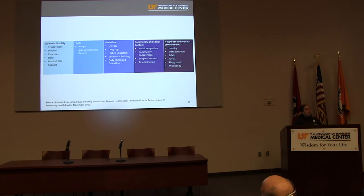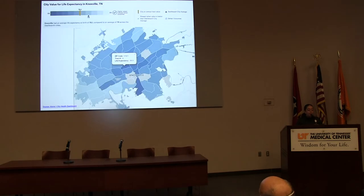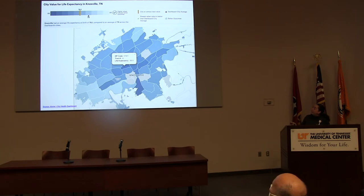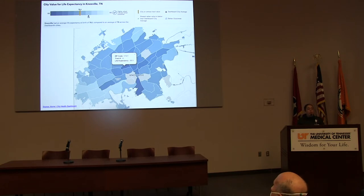I'd like to bring down some examples of how inequities can look at the county level. For those of you from Knoxville, this is our map, and here you can see clearly some disparities in life expectancy. Here you can see the wealthiest areas in town and here the more economically challenged areas of town. The difference between these two areas is 20 years in life expectancy. This brings us to start thinking why that happens — why are we getting people living 66 years while others live 86?